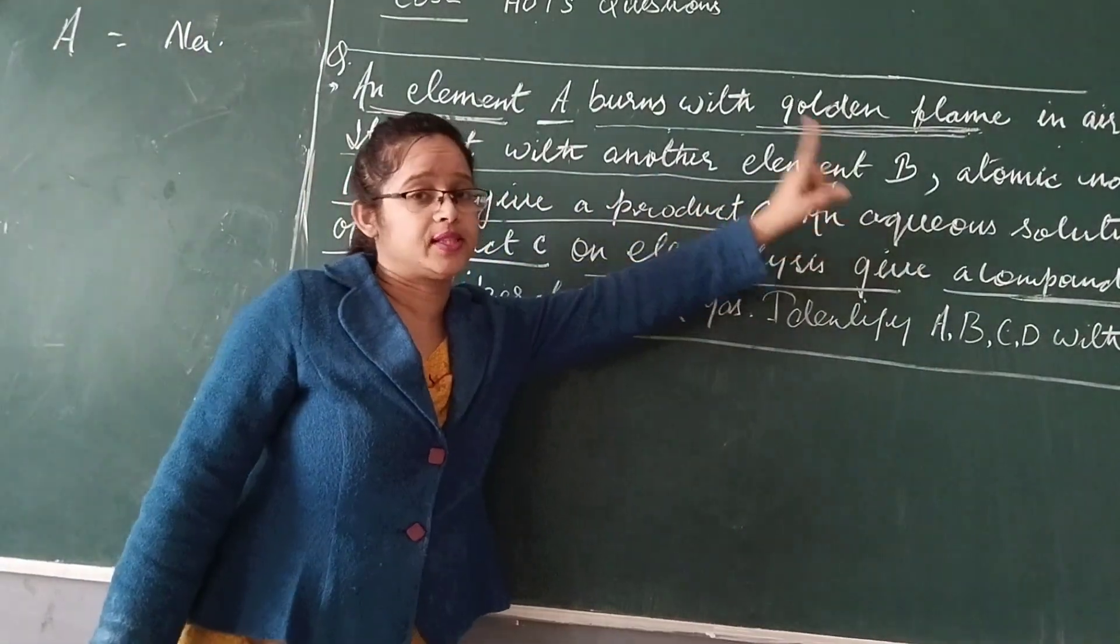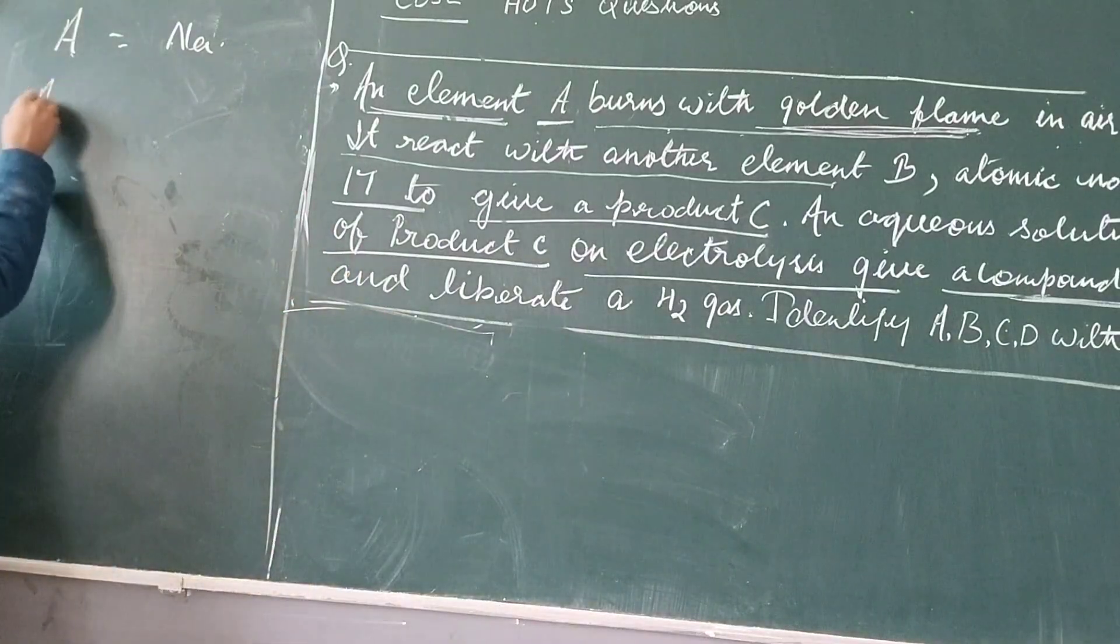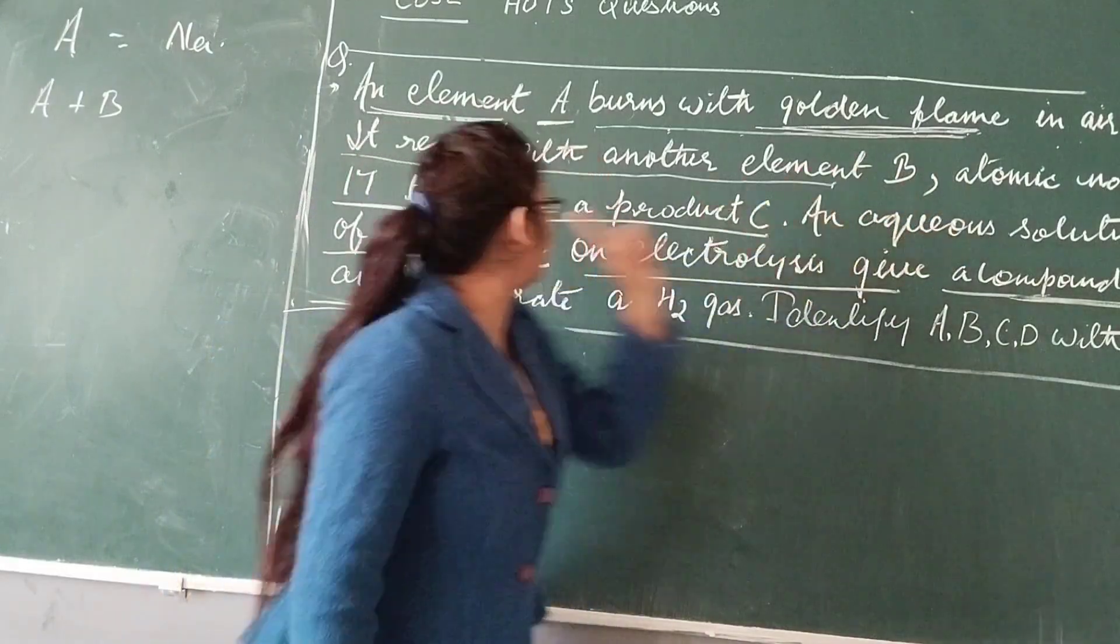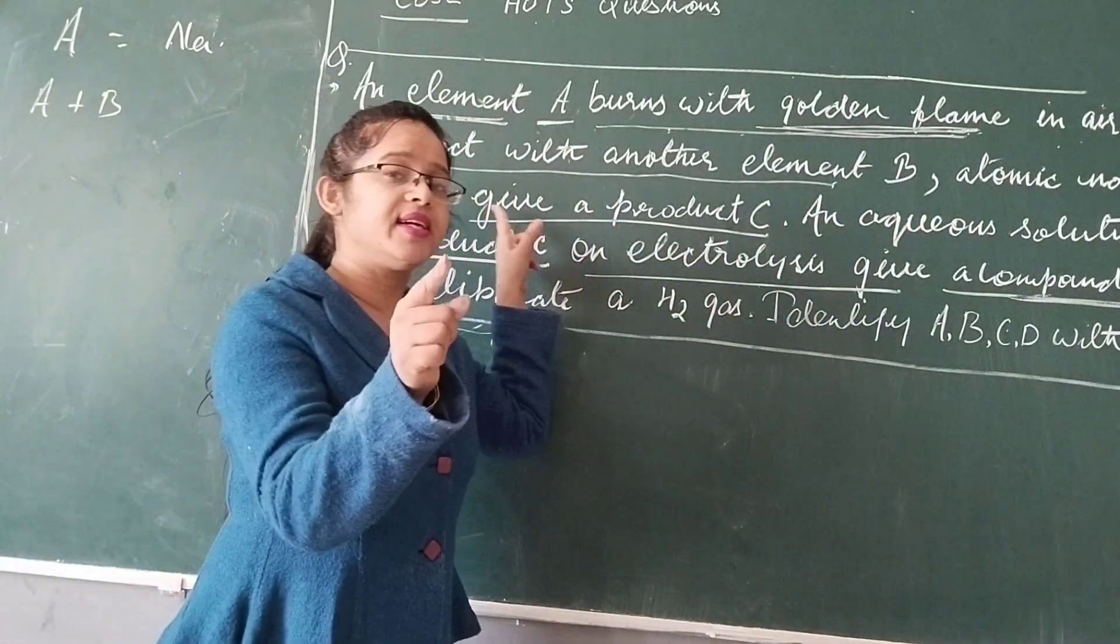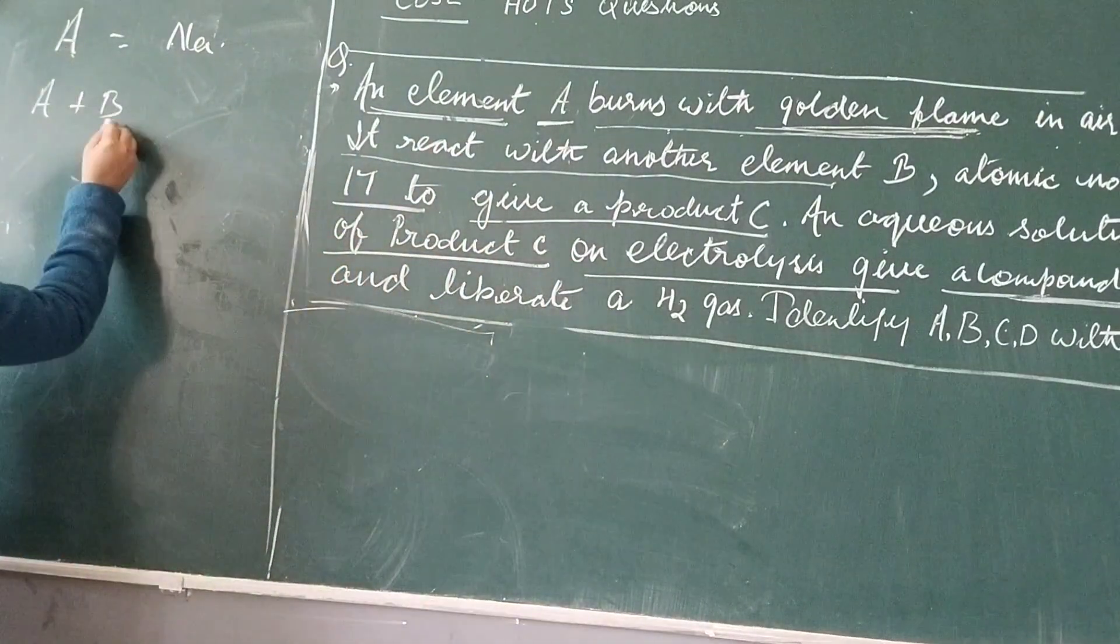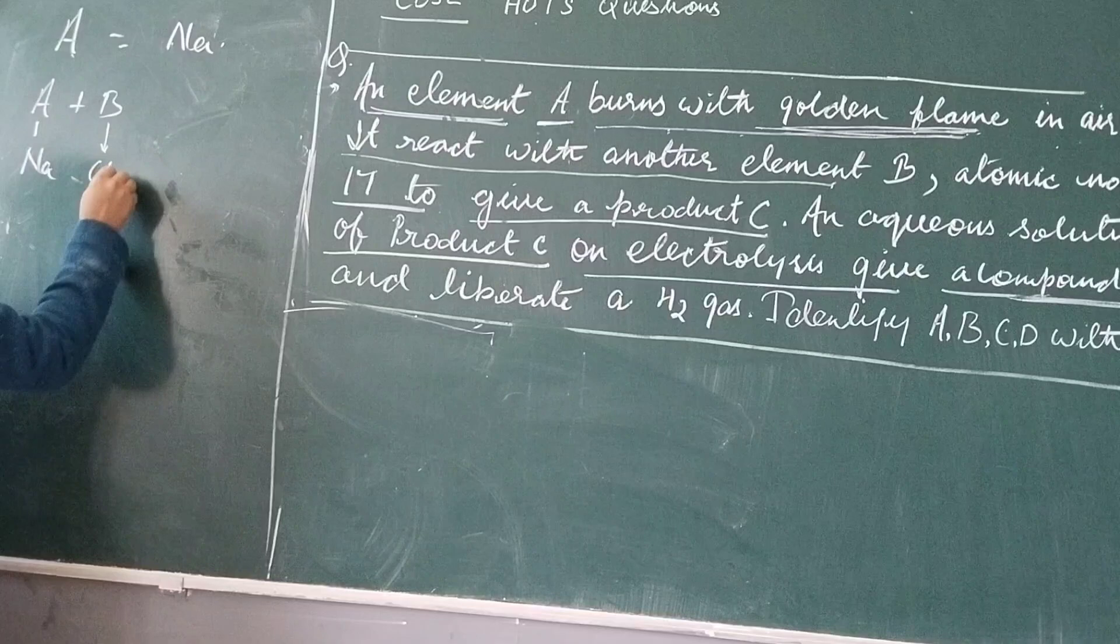It reacts with another element B. When A reacts with B, then what does A react with B? We have another element, atomic number 70, atomic number of elements, chlorine. So B reacts with sodium. A is sodium and B is chlorine.